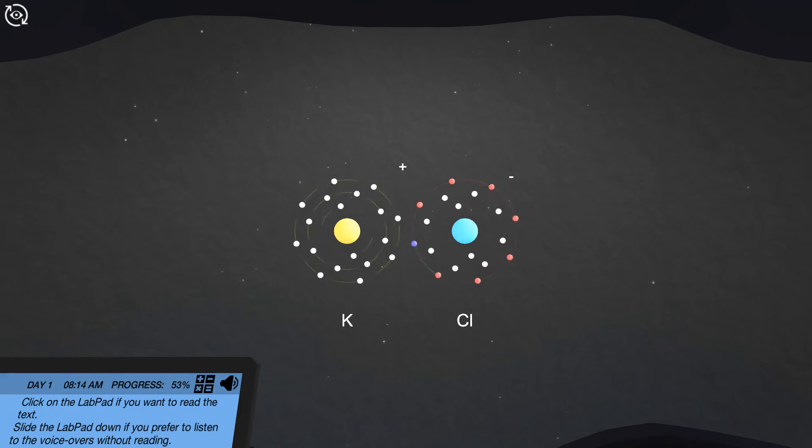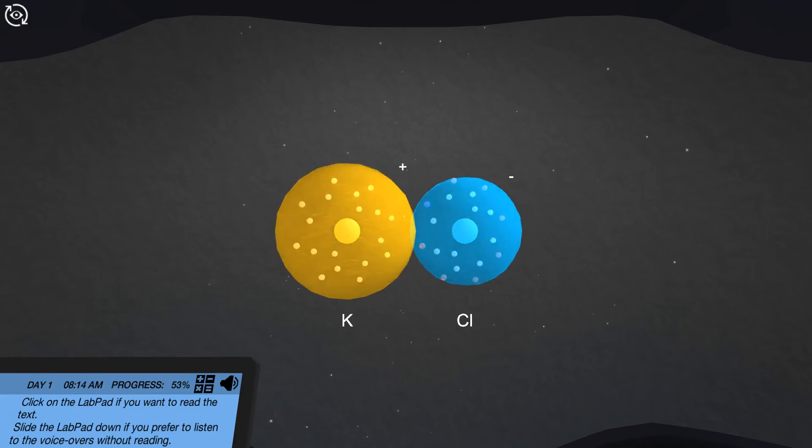Since potassium lost 1 electron, it becomes positively charged. Chlorine has gained 1 electron and becomes negatively charged. The ionic bond is formed between potassium and chlorine by the electrostatic attraction between the opposite charges. Together, they are electrically neutral.